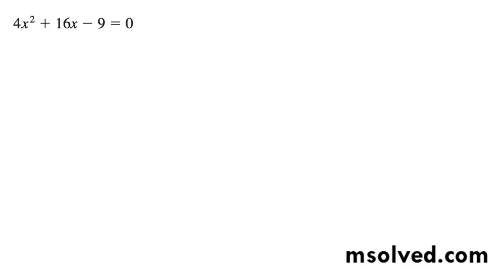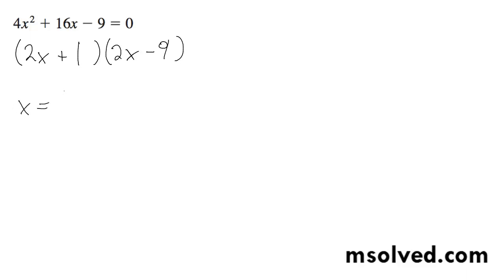Factor and solve the quadratic equation. I'm going to break this down — it's going to be 2x and then 2x something. Minus 9 and then plus 1, which means x is going to be equal to negative 1 half and 9 halves. And that's it.